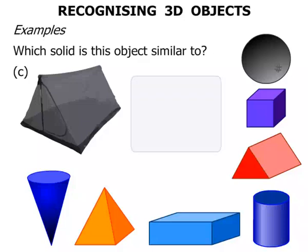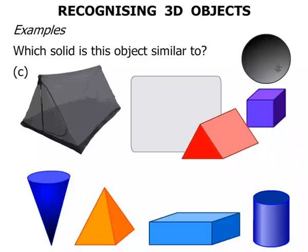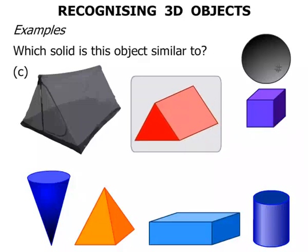This is a tent. One of the older style tents. What solid does this look like? The triangular prism. Fantastic.